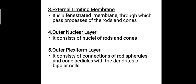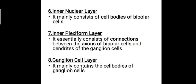The sixth layer is the inner nuclear layer, which mainly consists of the cell bodies of the bipolar cells. The seventh layer is the inner plexiform layer, which consists of connections between the axons of the bipolar cells and the dendrites of the ganglion cells.